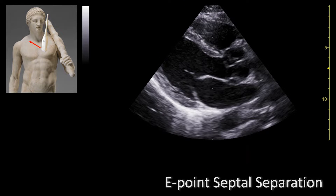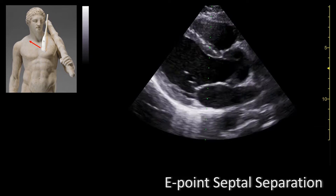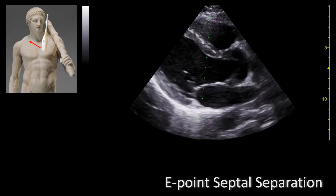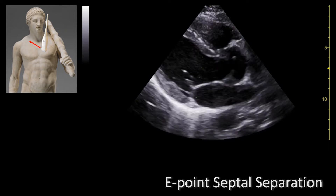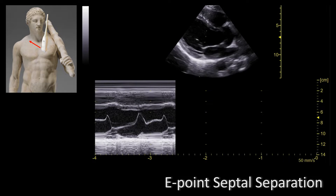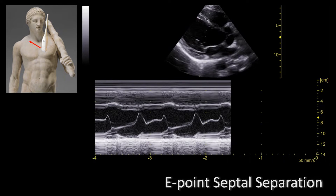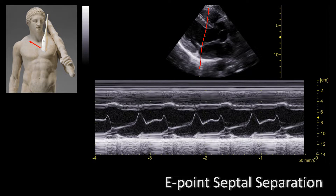After getting a good view of the mitral valve and the septum in the parasternal long axis view, you select M-mode on your ultrasound. You place the M-mode vector right through the tip of the mitral valve, which is right here. This is the tracing that you will get.